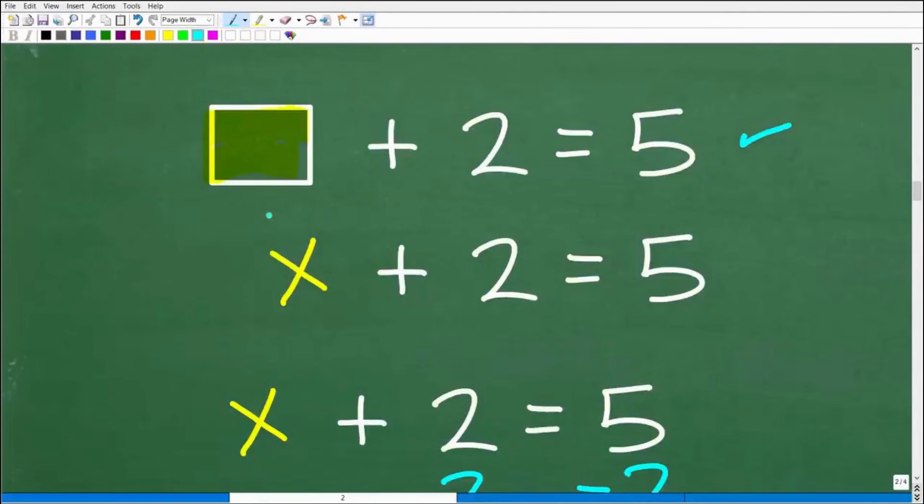Well, in algebra, we have these things called equations. So it's basically the same kind of game or the same kind of question. Like, hey, there's a mystery number, but instead of using this box, we're going to use a variable like X. But it still represents a number just like this box represents a number. So we have some number, we'll represent that number by this variable X, plus 2 is equal to 5. Now, of course, we can see here that the answer is going to be 3.